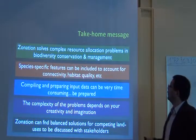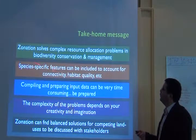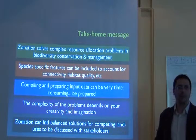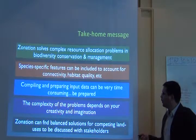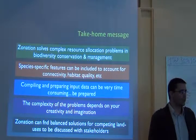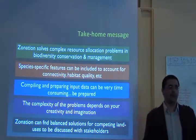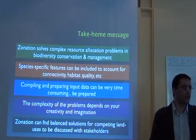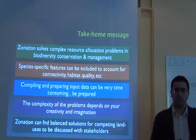Zonation handles complex resource allocation problems in biodiversity conservation and management. You can include species-specific features to account for connectivity, habitat quality, and other factors. You should be prepared to spend a lot of time preparing and collecting input data. The complexity of the problems depends on your creativity — any variable that relates to what you're trying to protect, such as the proportion of budget spent on environmental issues as a surrogate for political willingness, can be used.